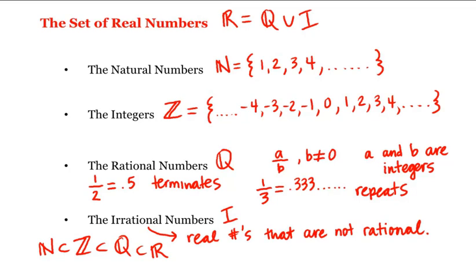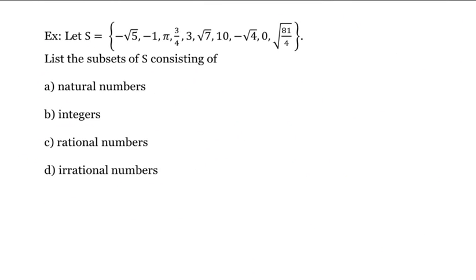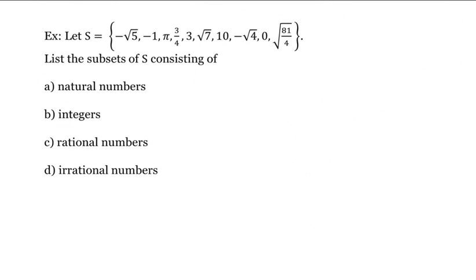Let's look at an example. Let S be this set, and we want to list the subsets of S consisting of the natural numbers, the integers, the rationals, and the irrationals.